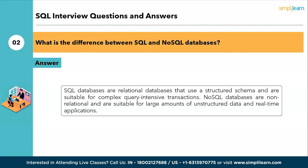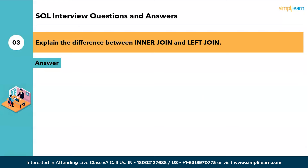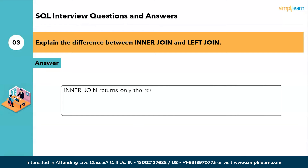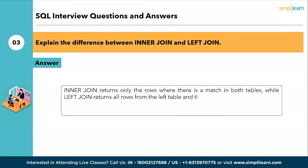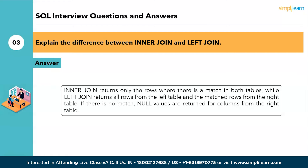The third question: explain the difference between inner join and left join. Inner join returns only the rows where there is a match in both tables, whereas left join returns all rows from the left table and the matched rows from the right table. If there is no match, null values are returned for columns from the right table.